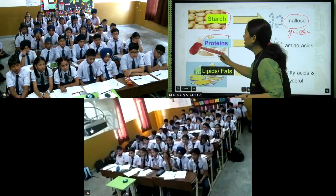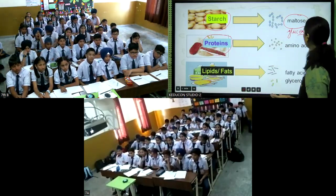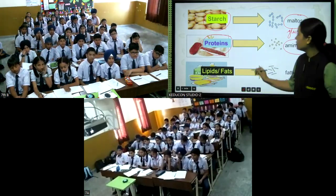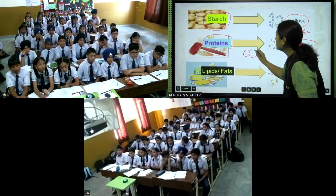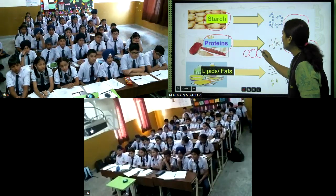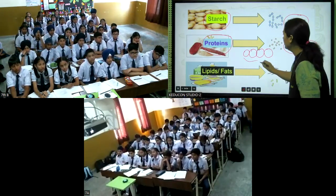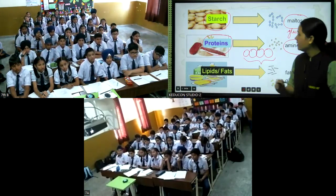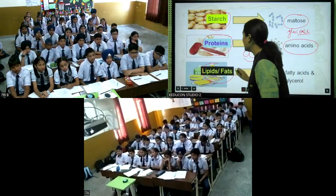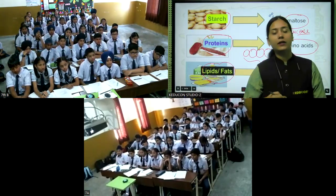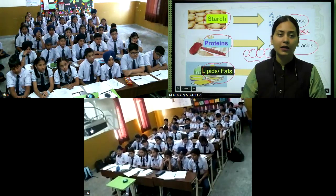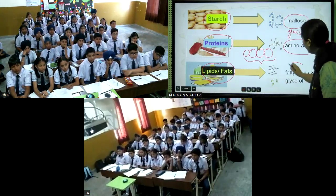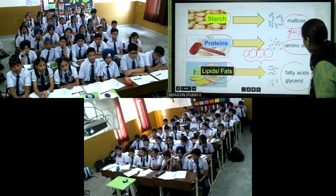Proteins break down into amino acids. Amino acids combine together to make proteins. Now, lipids or fats — the kind we get from butter or ghee — are broken down into fatty acids and glycerol.